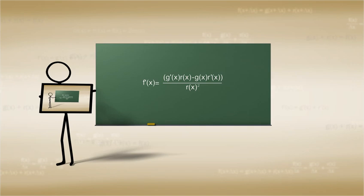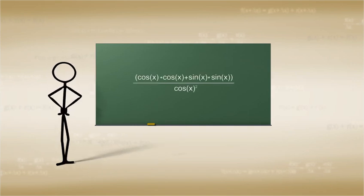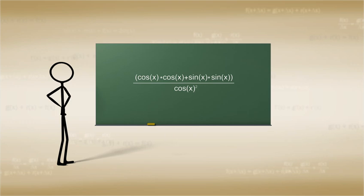this results in the equation, in parentheses, cosine of x times cosine of x plus sine of x times sine of x, all over cosine of x squared.